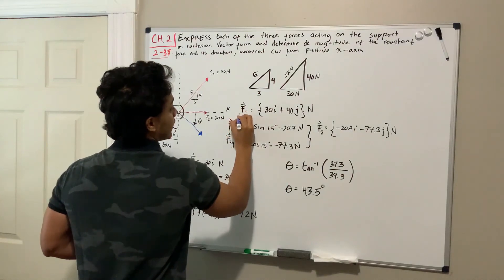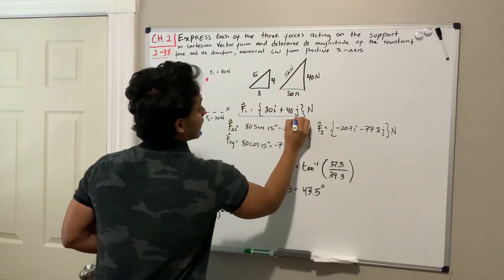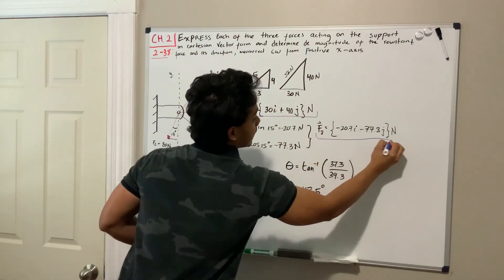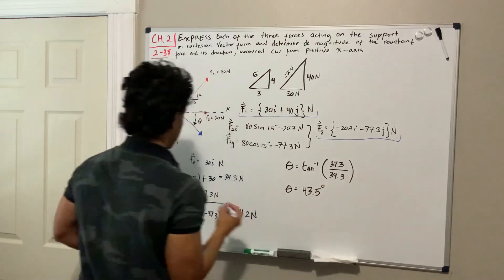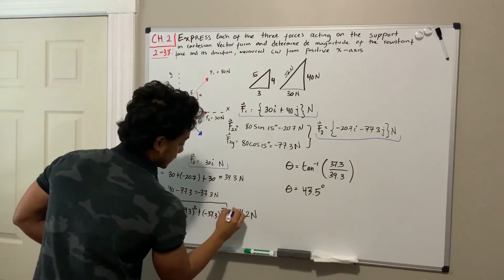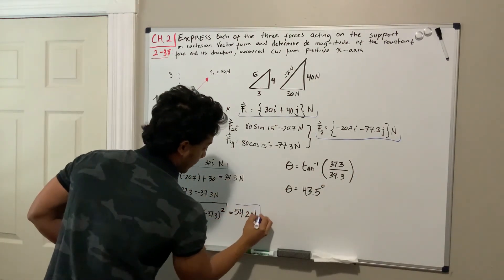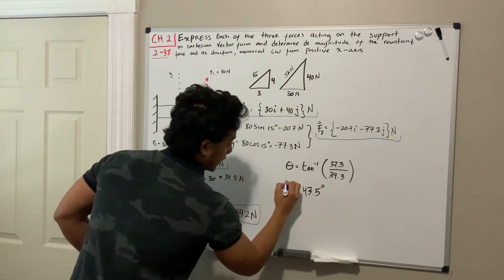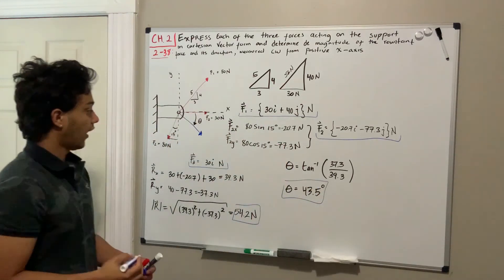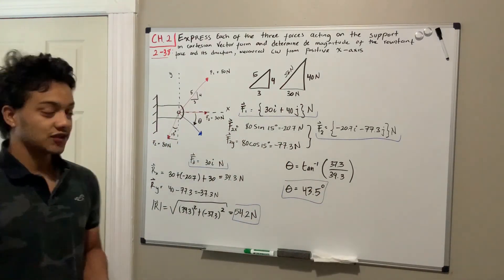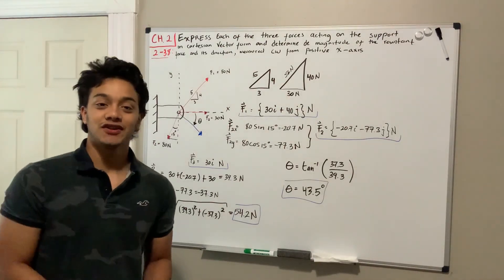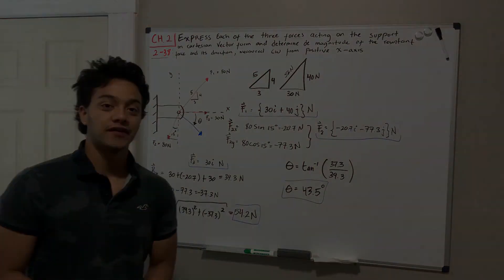So those are all your answers: the Cartesian vector forms for F1, F2, and F3, plus the resultant magnitude of 54.2 Newtons at 43.5 degrees. That was it for this video — thank you guys, and I'll see you in the next one.